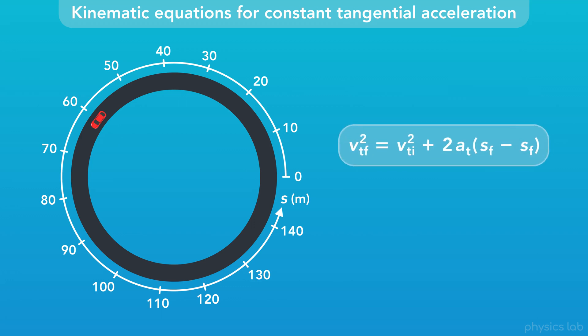The second equation tells us that for an object accelerating in circular motion, the final tangential velocity squared is equal to the initial tangential velocity squared plus 2 times the acceleration times the displacement, or the final minus the initial positions. That one can help us find things like the tangential velocity of an object in circular motion after accelerating over a given displacement.